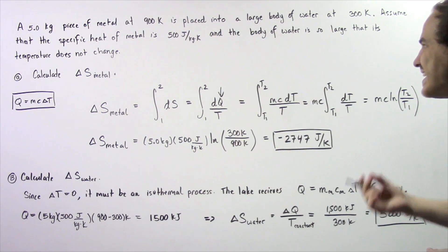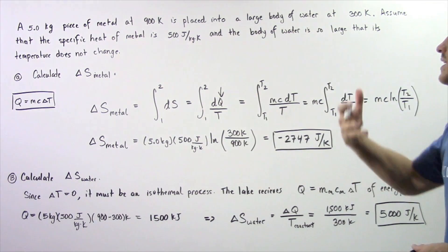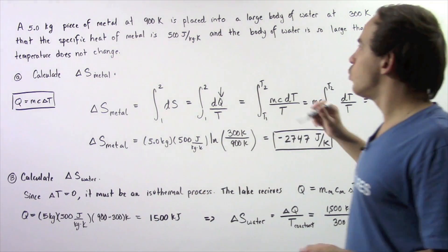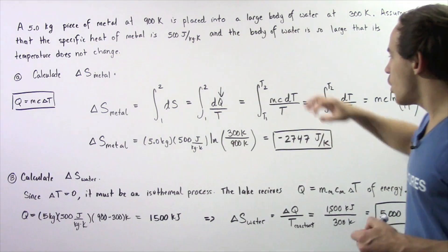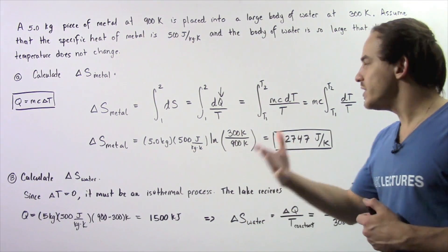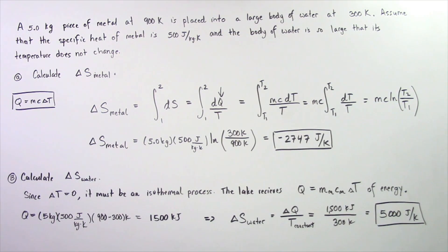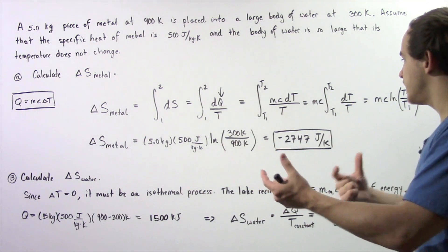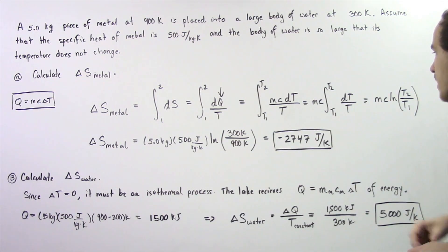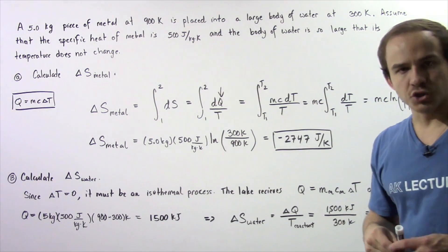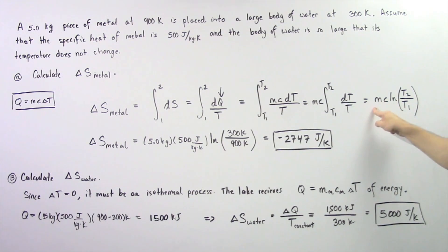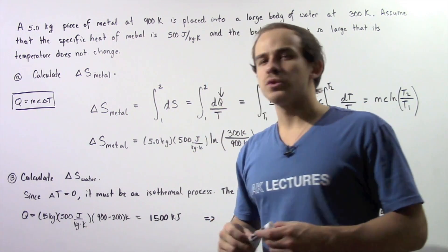T1 is our initial temperature and T2 is our final temperature, so T1 equals 900 K and T2 equals 300 K. Since M and C are constants, we take those out of the integral, giving us the product of mass and specific heat multiplied by the integral from T1 to T2 of dT divided by T. Evaluating this integral yields the formula: mass times specific heat times the natural log of T2 divided by T1, which is our change in entropy of the metal.